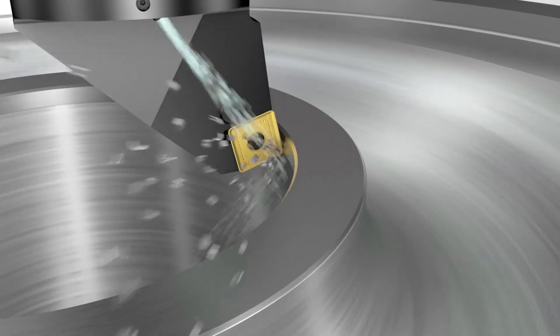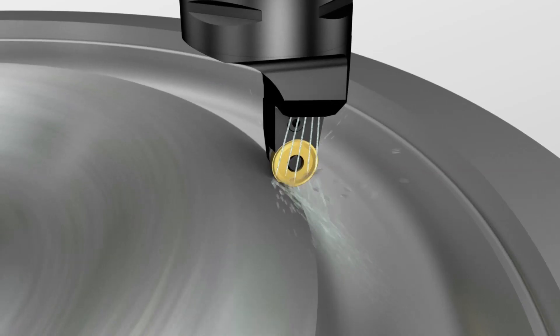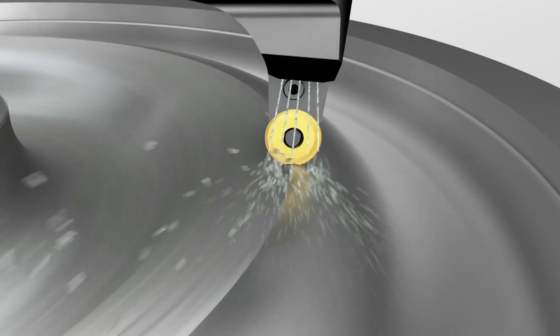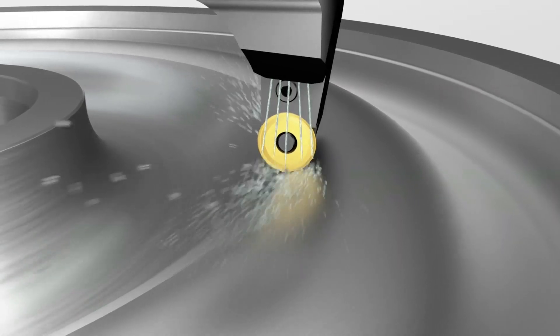The hub, web and rim on the wheel are machined. Round inserts are combined with over and under coolant for best performance and chip evacuation.